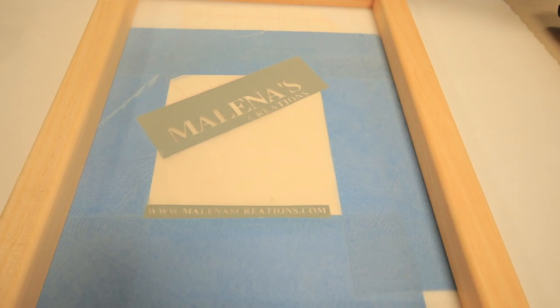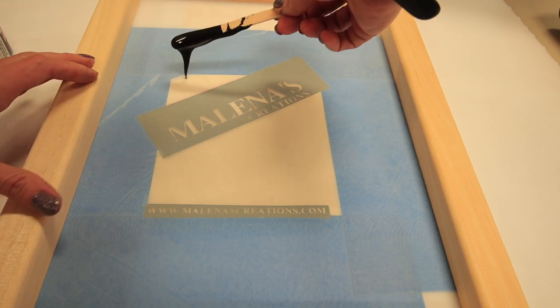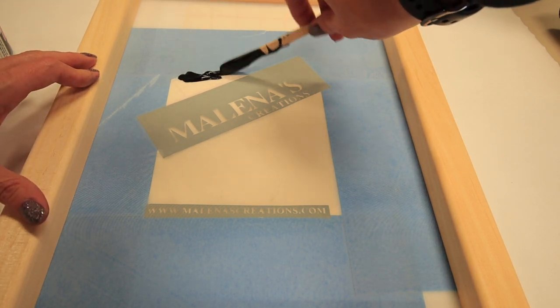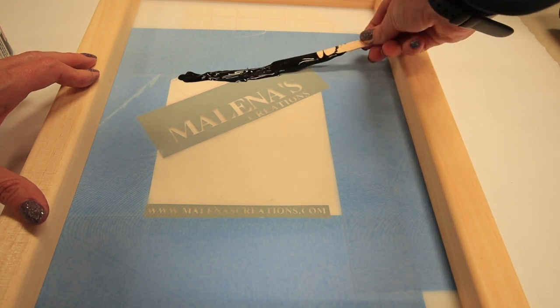Now you're going to take your ink and you're just going to start all the way at the top and just kind of put a good amount on there. You don't want too much and you don't want too little. You want just a good amount and you're just going to cover along the top.